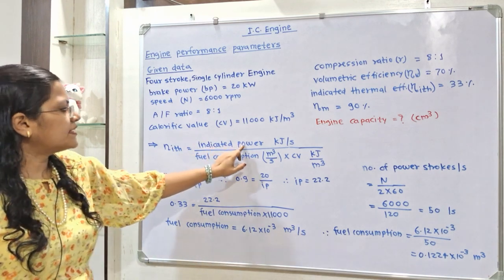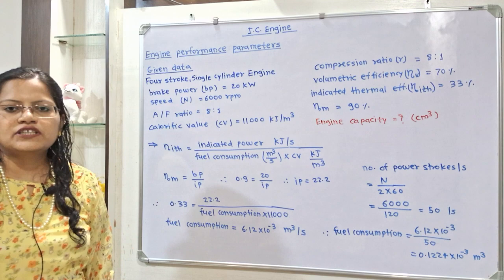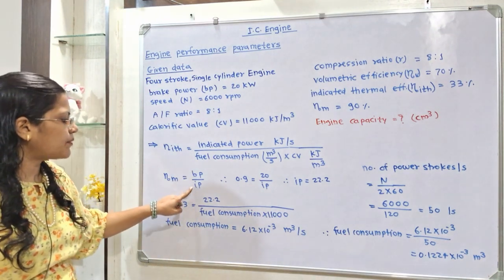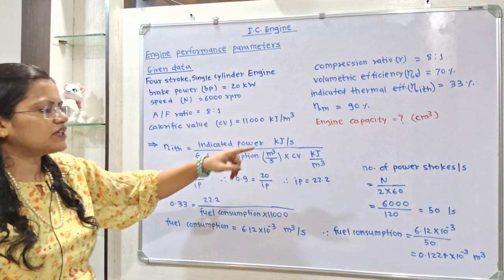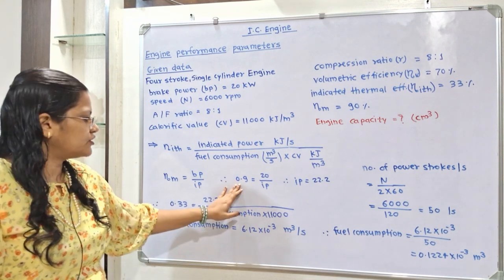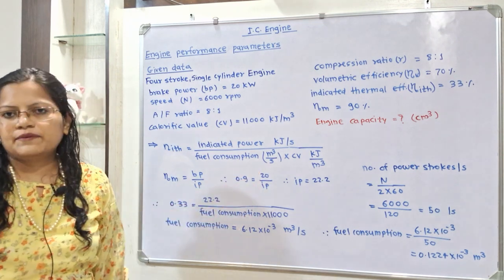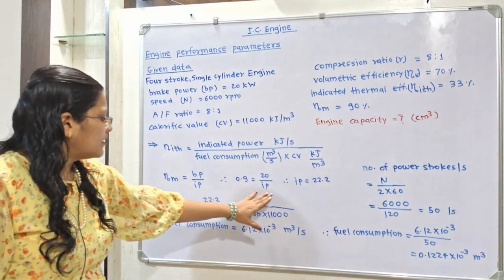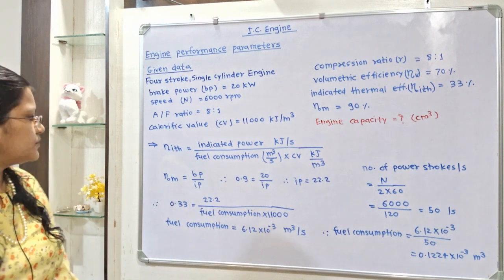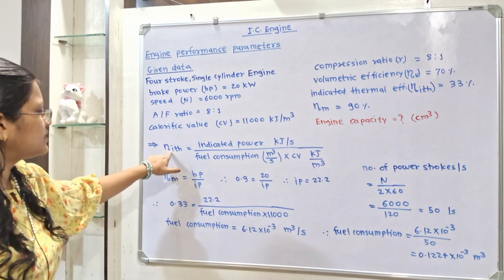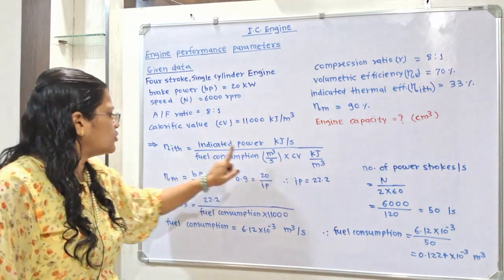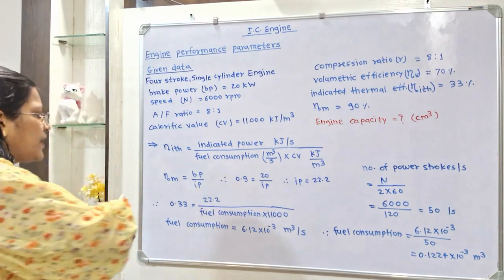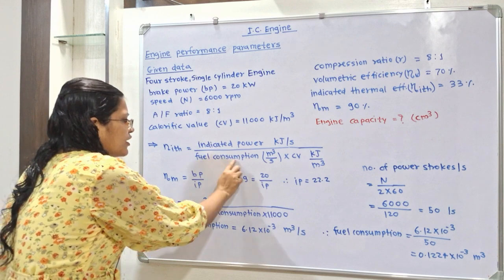To calculate indicated power IP, we use the mechanical efficiency formula: mechanical efficiency equals brake power divided by indicated power. So 0.9 equals 20 divided by IP, therefore IP equals 22.2 kW. Now we calculate fuel consumption. Indicated thermal efficiency is known, IP is known, calorific value is known, and fuel consumption is the unknown we need to find.